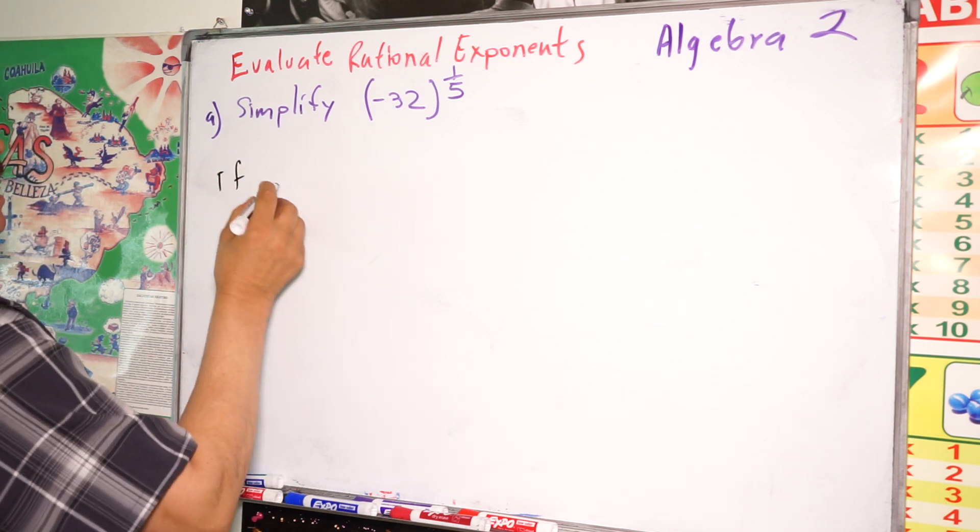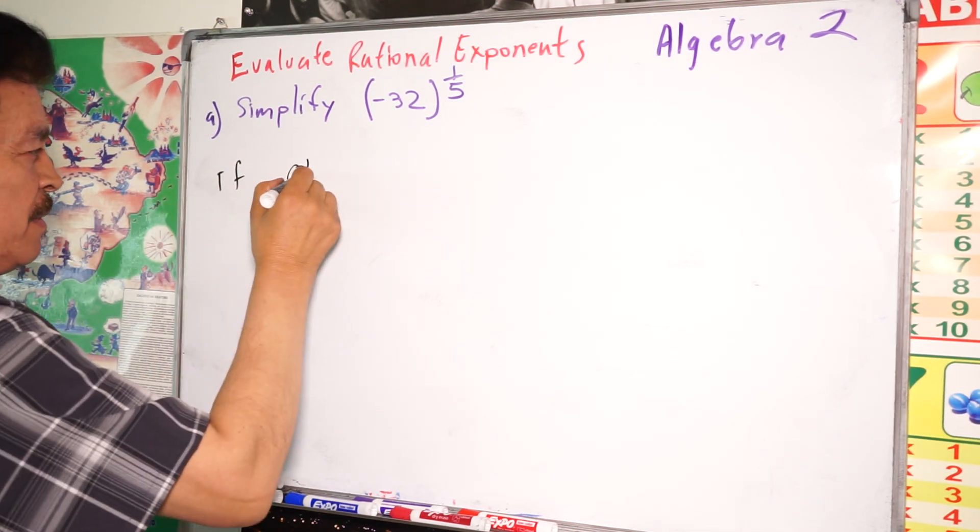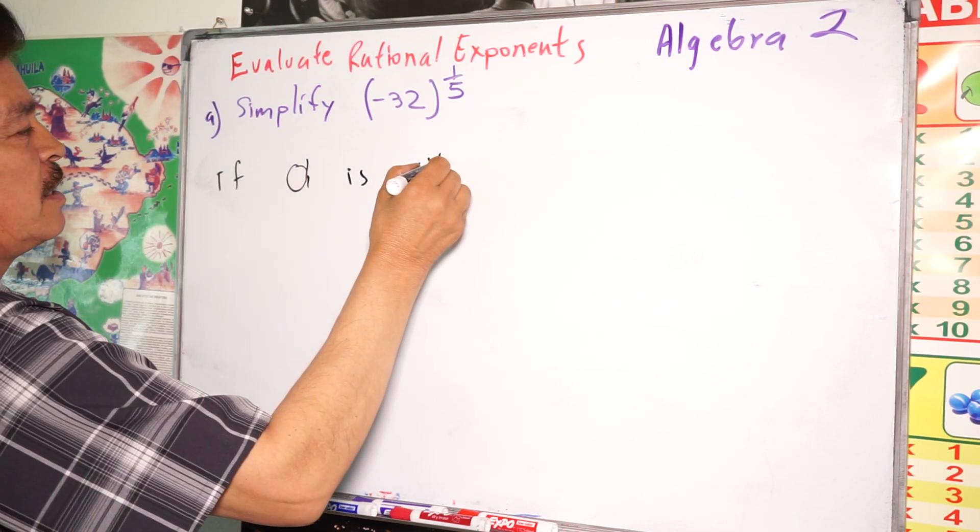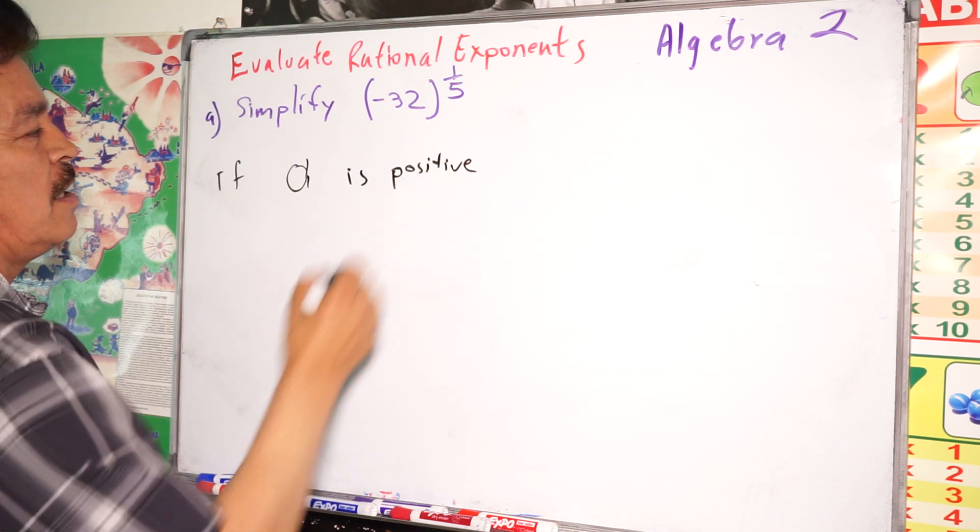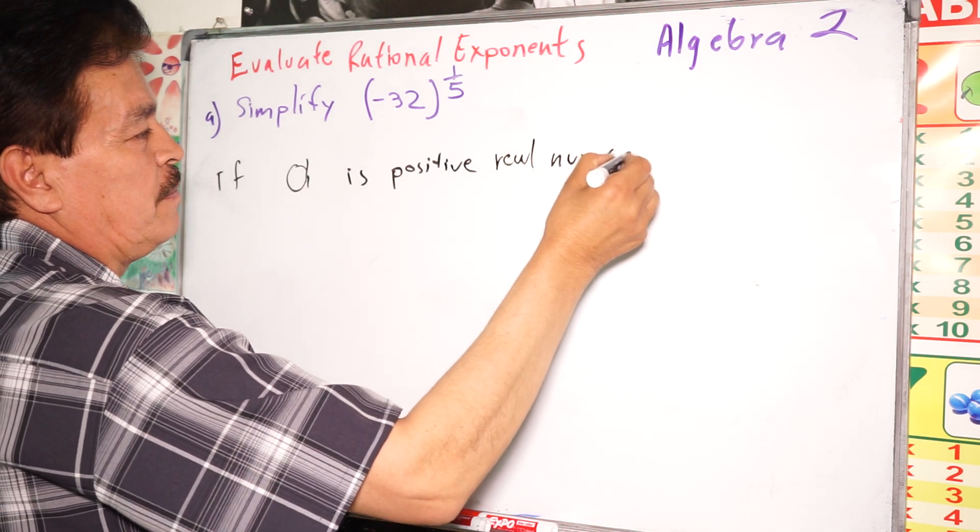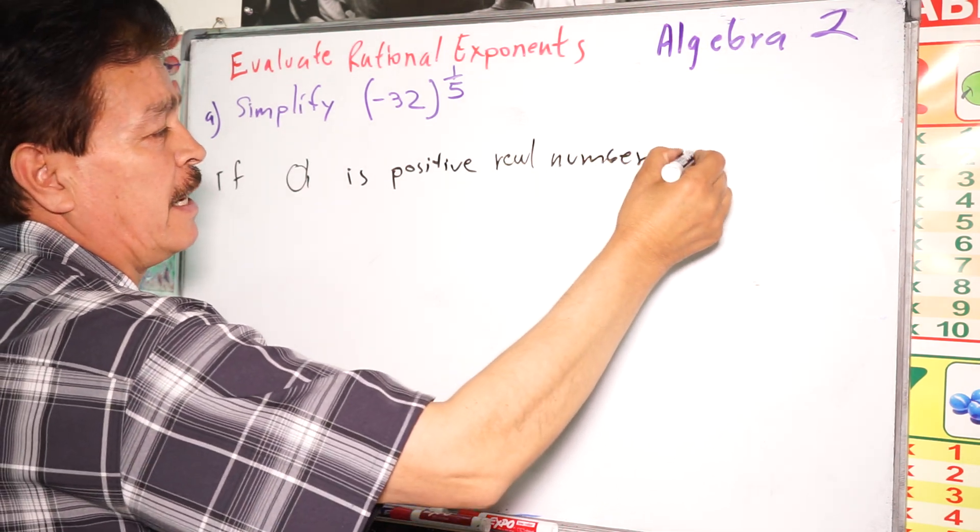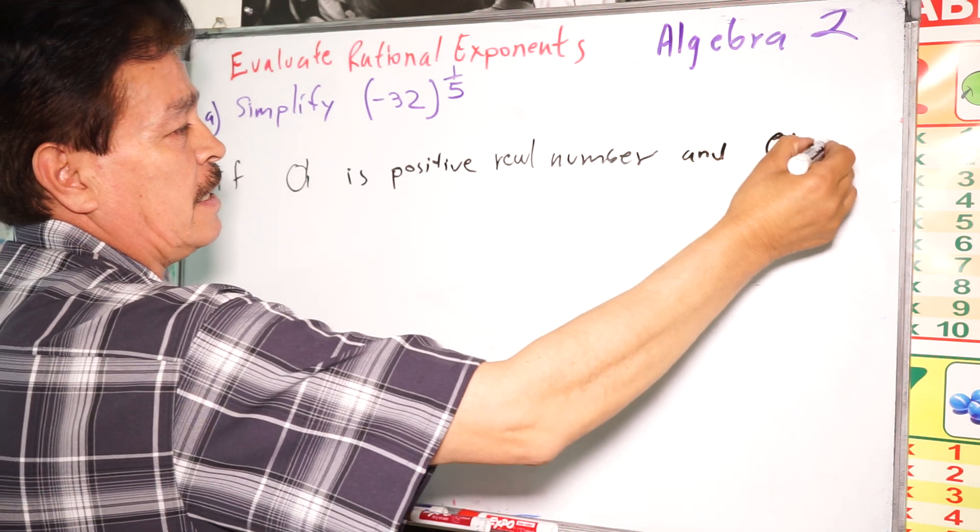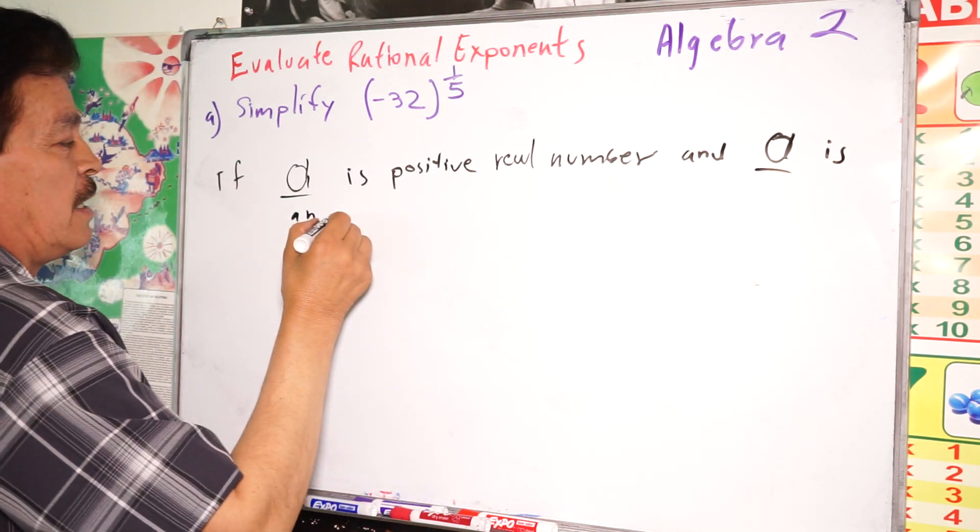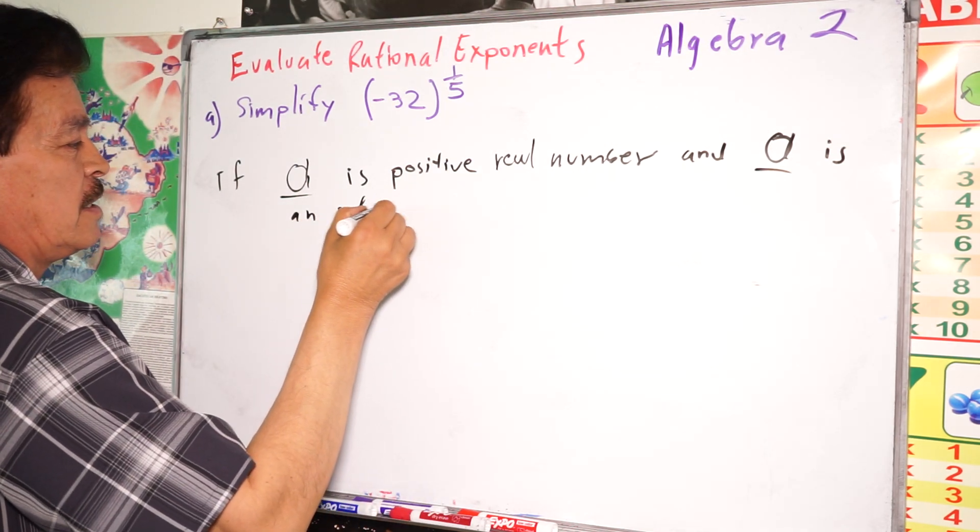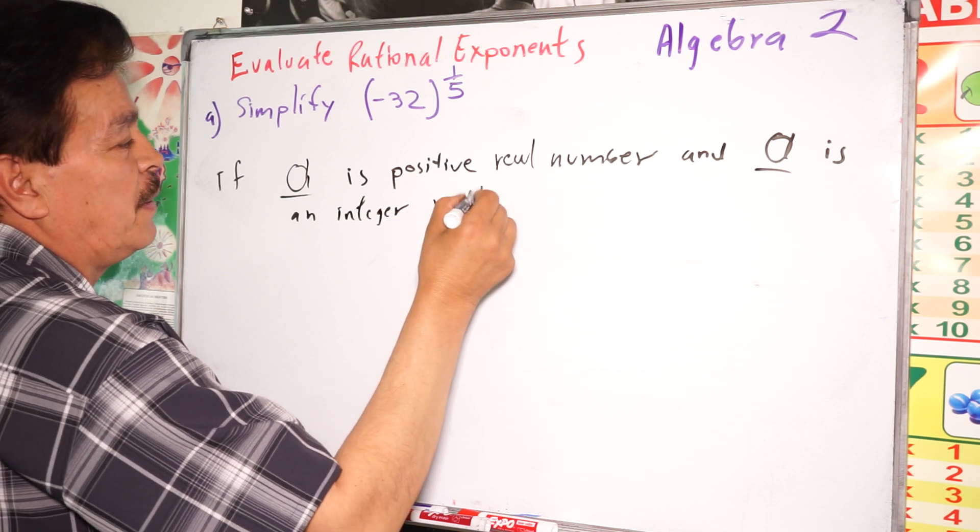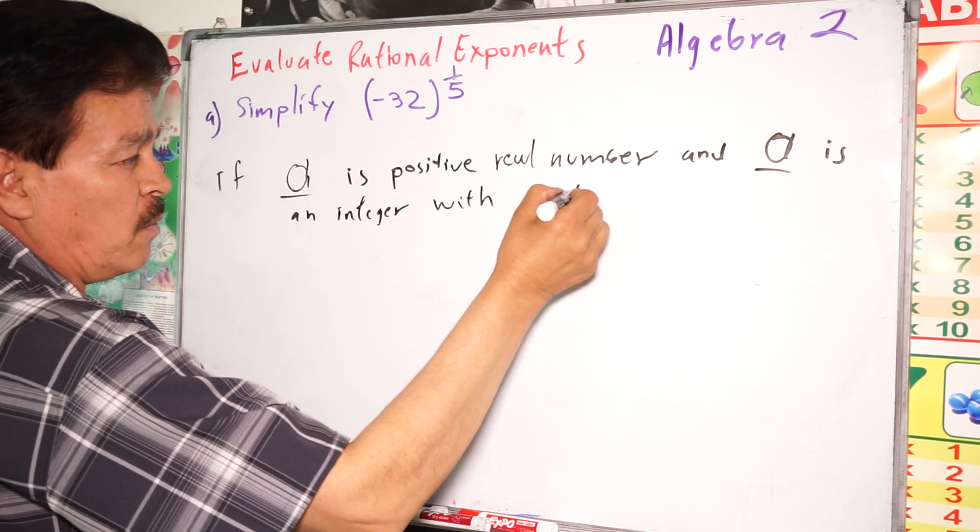If, in this case, a, like a variable, is a positive real number, and n is an integer with n greater than 1...